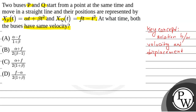Let us say the displacement is x. Velocity will be what? That is dx/dt — that is the differentiation of x with respect to time. That is the velocity.